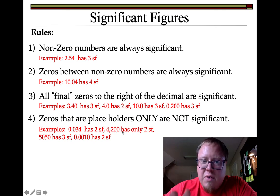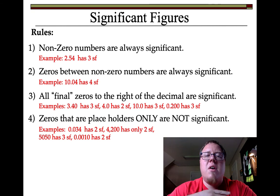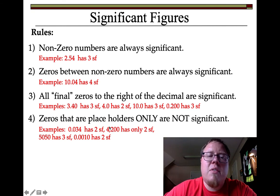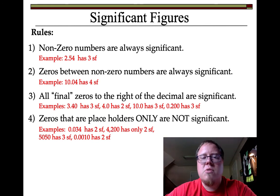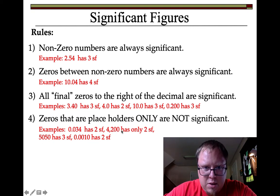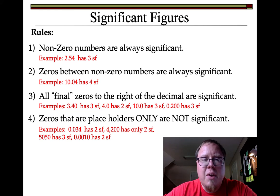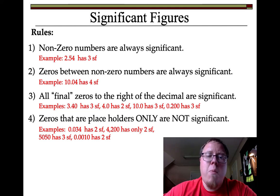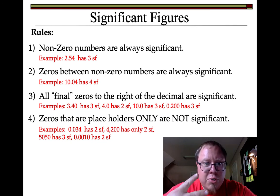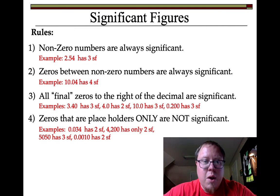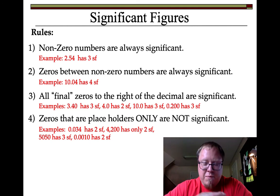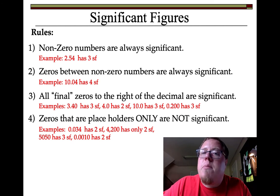4,200 has only two significant figures. I probably had a 4,000 line and a 5,000 line, reading between them — about 200 — but I wasn't able to fine-tune it further. So I can read the thousands and hundreds, but not the tens or ones. Those trailing zeros just tell you how big it is. If I convert 4,200 millimeters — it'd be 420 centimeters, which is 4.2 meters. Two significant figures both ways. The device is limited, but you should have the same number of significant figures regardless of the unit.